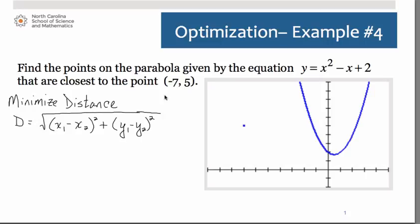This becomes what we want to minimize. Let's substitute in the values that we know so far. We have that ordered pair negative 7 comma 5, so I'm going to substitute those coordinates in place of our x sub 2 and y sub 2, and I'm going to change the x sub 1 and y sub 1 to just regular x and y.